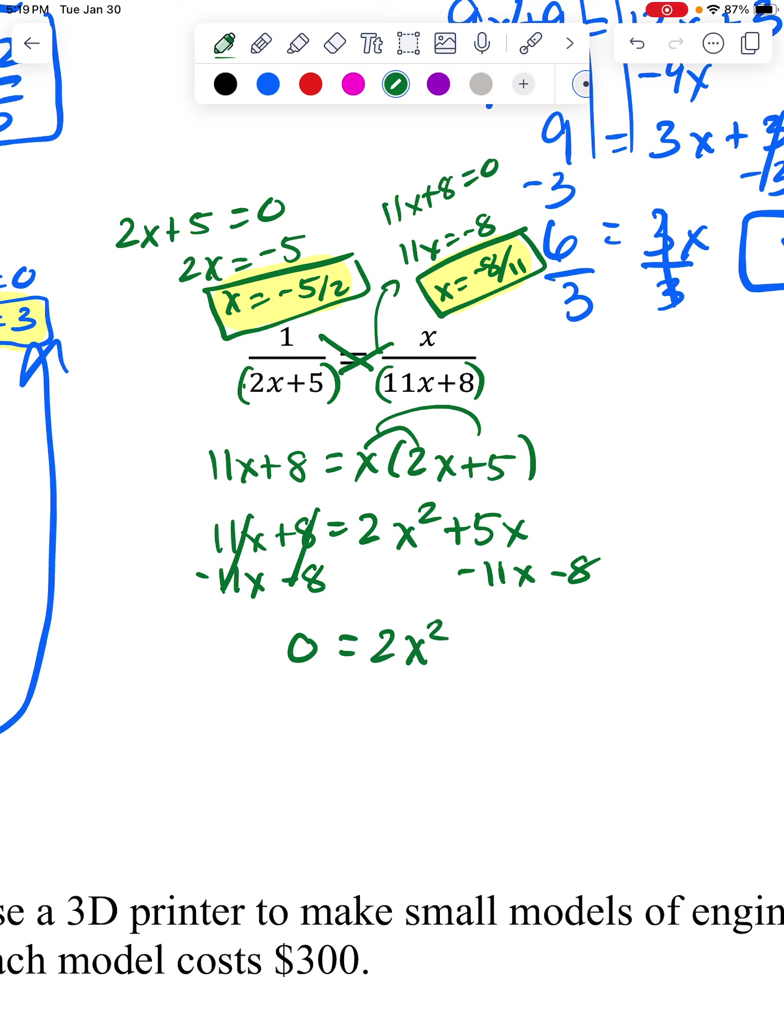Then I have 2x squared. This gives me minus 6x minus eight. Now I'm looking to factor. This one actually has a GCF of two. So when I take that out, it makes it easier to factor